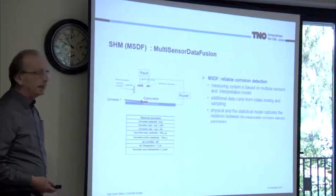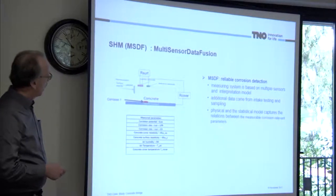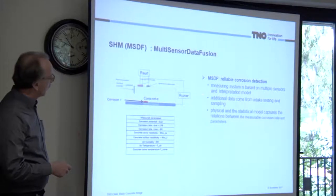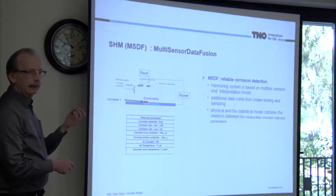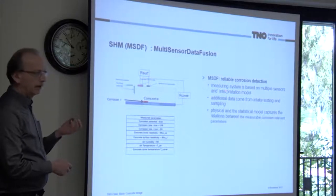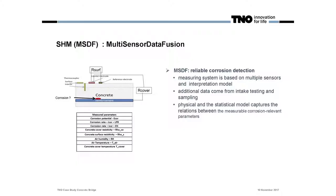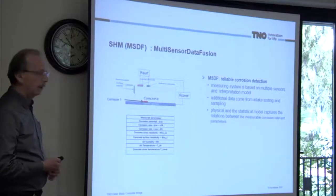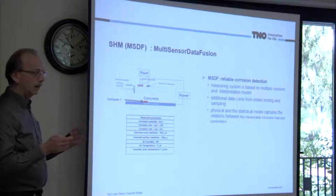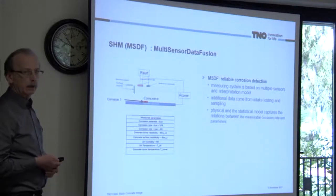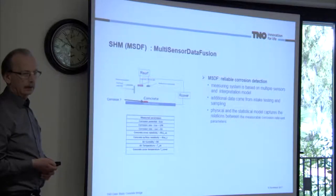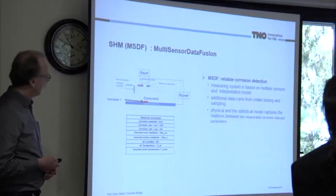The idea behind MSDF is that there is a set of different sensors, all of which measure a different physical quantity related to corrosion — as indirect indicators of possible corrosion and indicators of corrosion rates. When you combine all this information, it should improve the quality of your statement about whether or not there is corrosion and at which rate it is occurring.